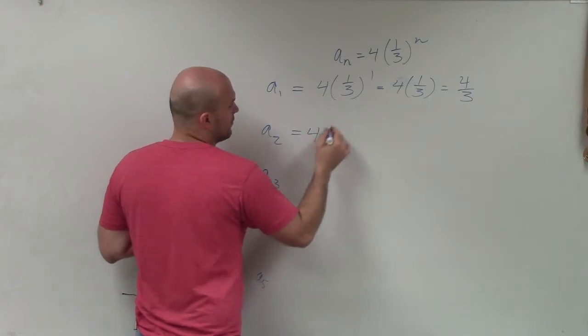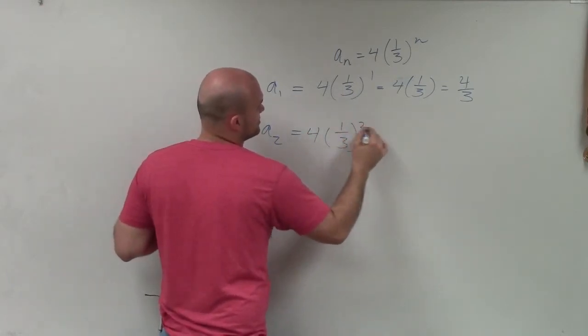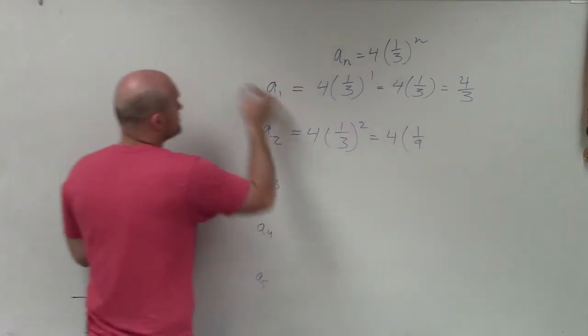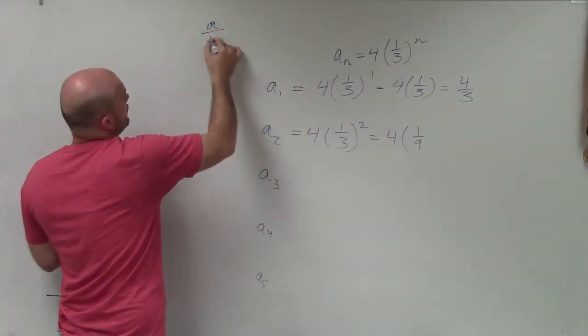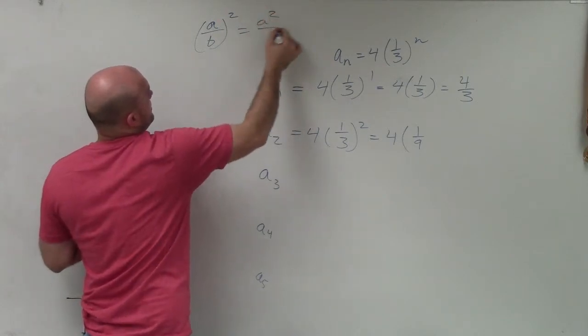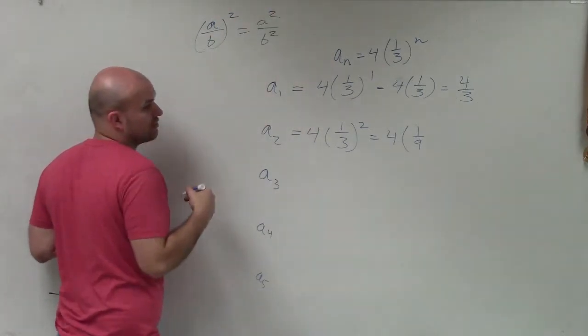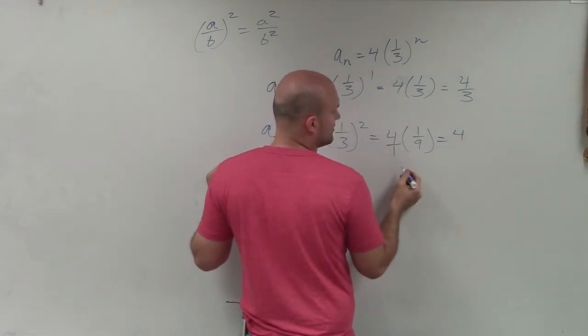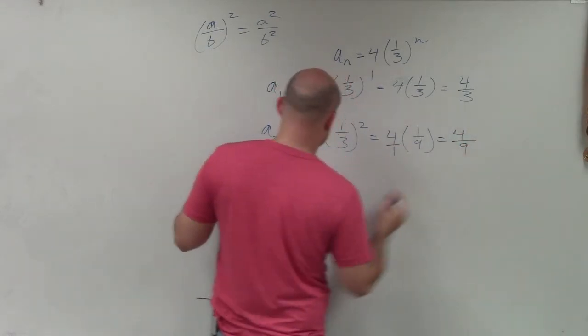For a sub 2, it would be 4 times 1 over 3 squared, which is equal to 4 times 1 ninth, right? Because remember, if you have a over b squared, that equals a squared over b squared. You can distribute across division. So that now, remember that 4 is really 4 over 1, so that becomes 4 ninths.